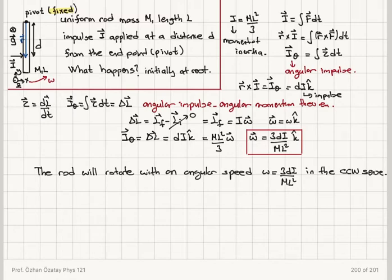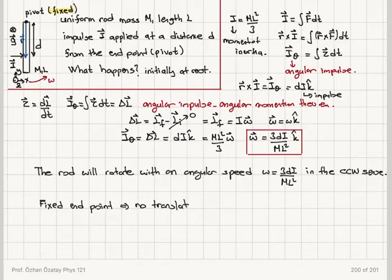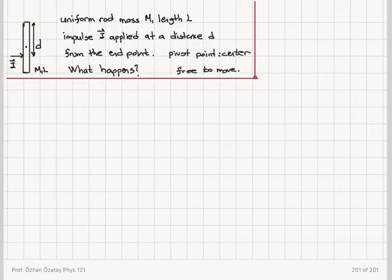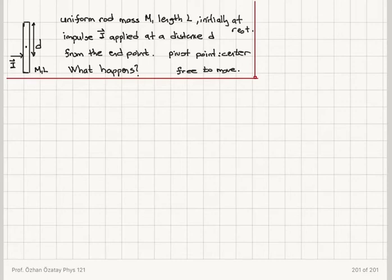Since the end point is a fixed pivot point, there will be no translation of the center of mass — only rotation is allowed. Now I'll look at a slightly different case: again a uniform rod of mass m and length l initially at rest, and an impulse is applied at a distance d from the end point, but now the pivot point is the center of mass.